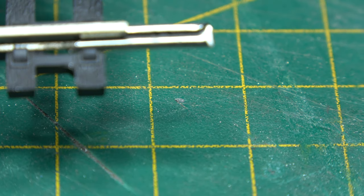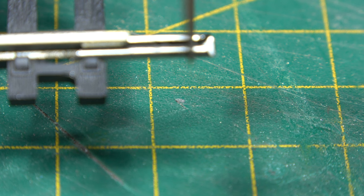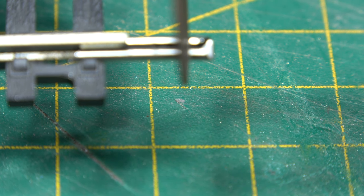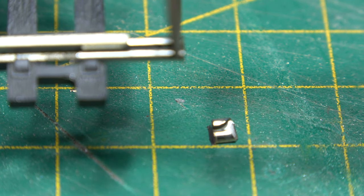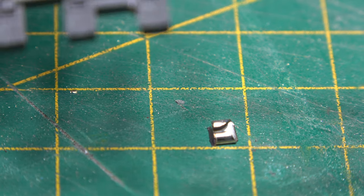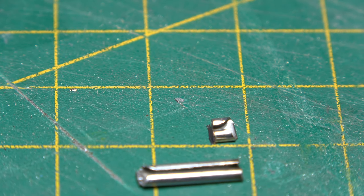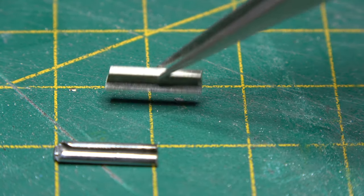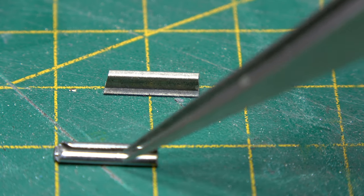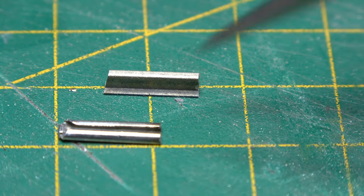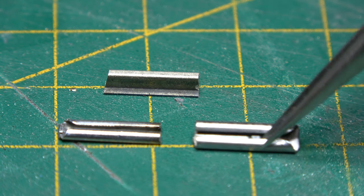It's a lot easier to cut the rail joiner when it's attached to a piece of rail. I use an old piece of set track. Again we'll have to open up the cut end because it will have closed up, so we need to do that first.